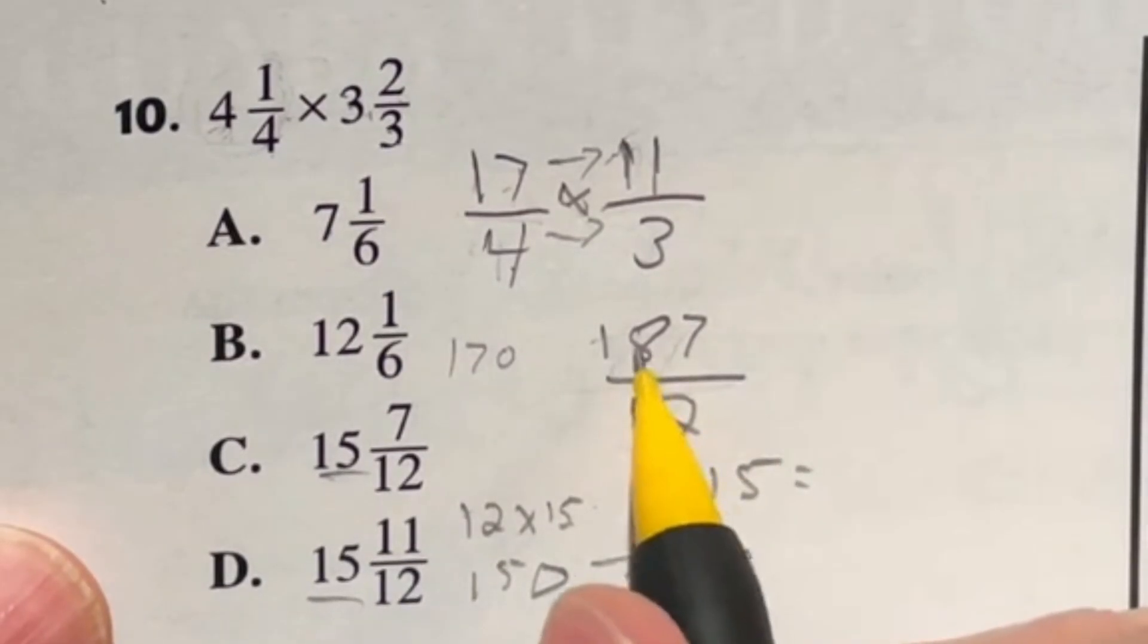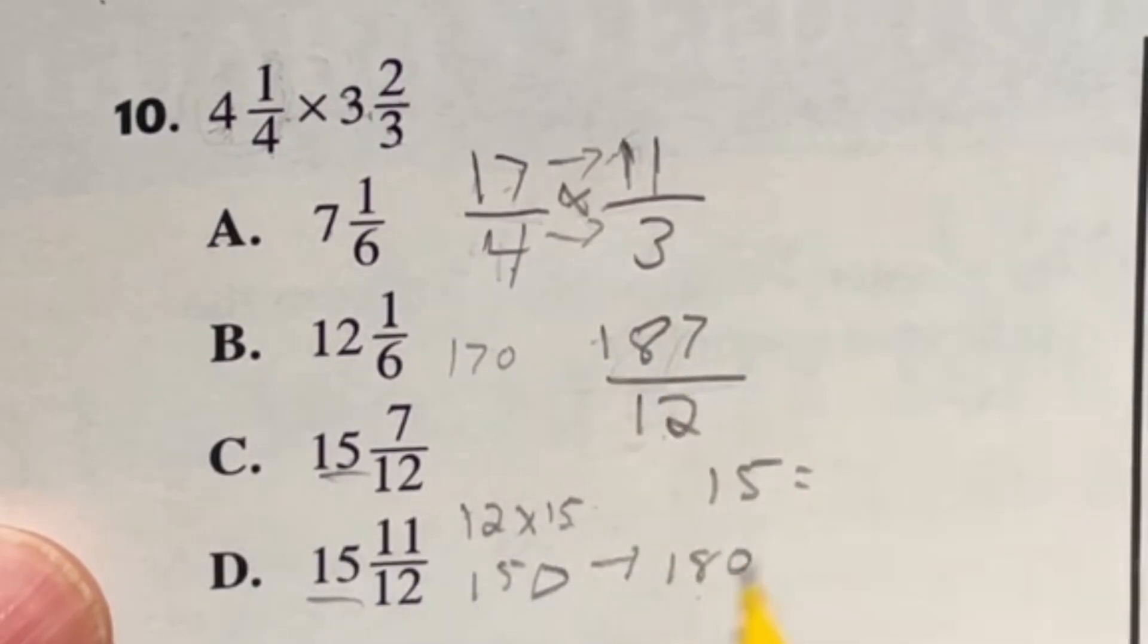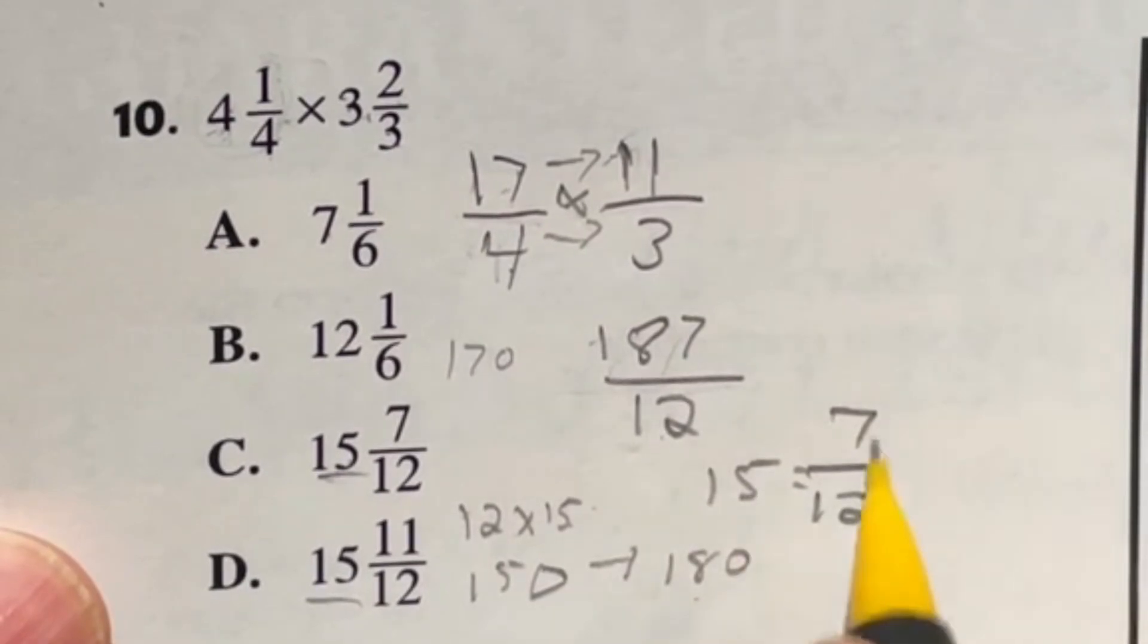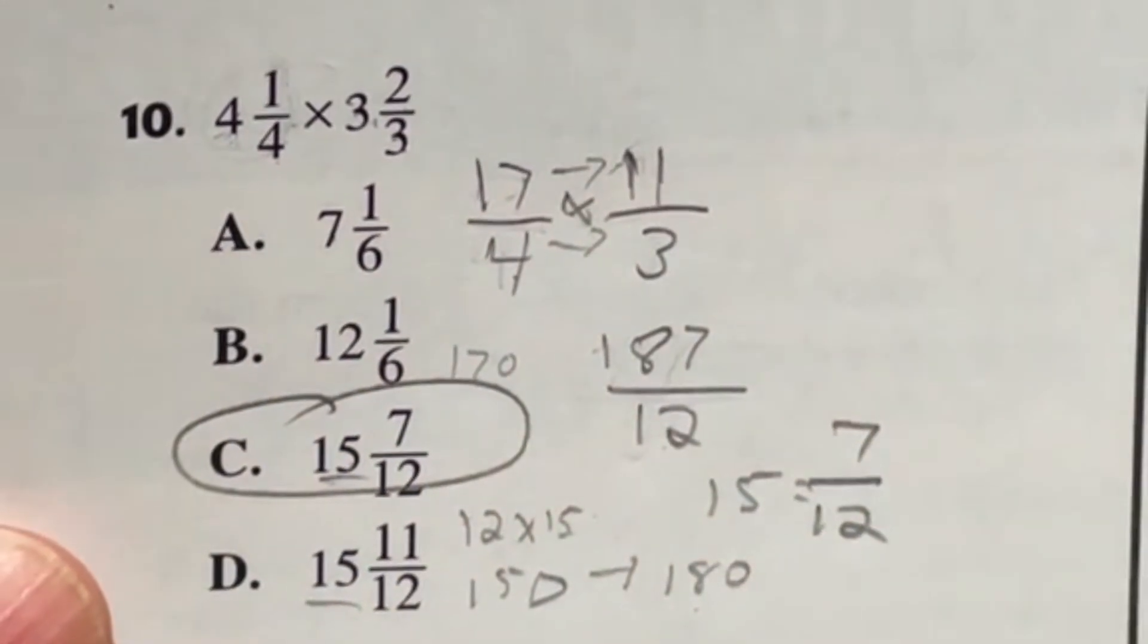So if I take out 15 of these 12 over 12, it's going to leave me with 180. Well, 187 minus 180, which is seven over 12. So our final answer should be 15, seven over 12, which it looks like is C.